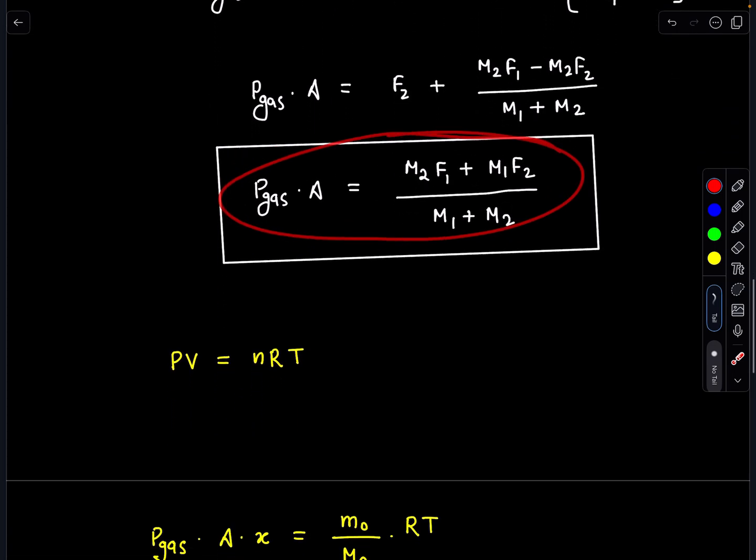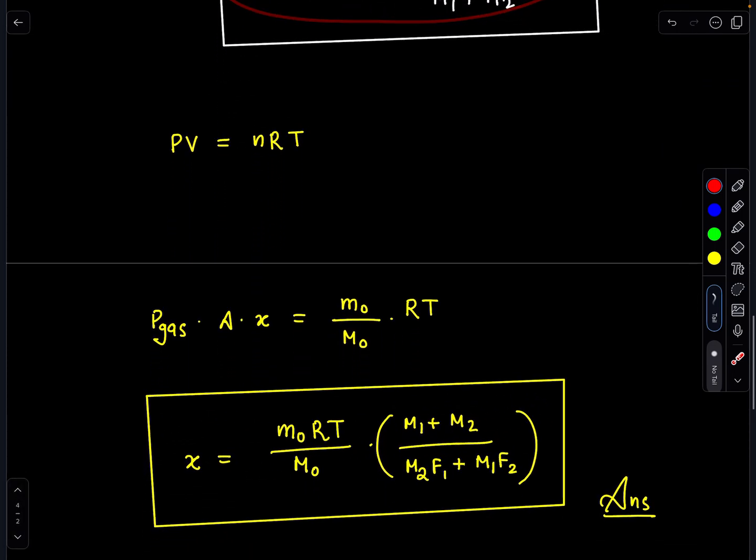Now we can use ideal gas equation. Here, since mass of the gas is given, we can write it as number of moles which is m_naught by the molar mass of the gas. When we substitute these values, we are getting the final steady state value of separation between the two pistons.